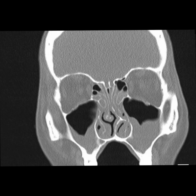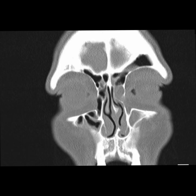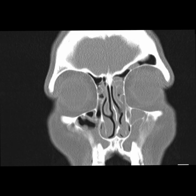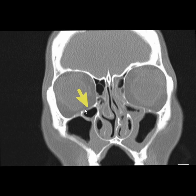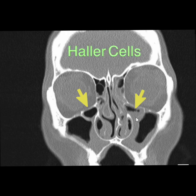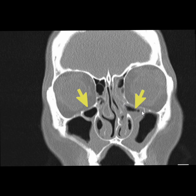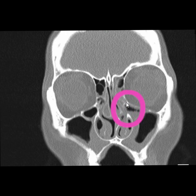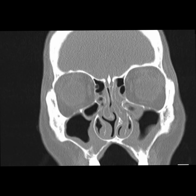Moving on to the next finding: as you would have already noticed while I was scrolling the scan, it's not only this deviated septum I want to show you. There are bilateral Haller cells. What is a Haller cell? A Haller cell is an ethmoidal cell which has migrated laterally and gone onto the roof of the maxillary sinus. It has gone laterally and situated there — if this increases, you can obviously understand it can occlude the ostiomeatal complex and cause sinusitis. This is why this is a really interesting scan — there are so many anatomical variations that can occlude the sinuses.